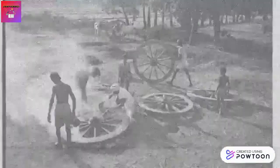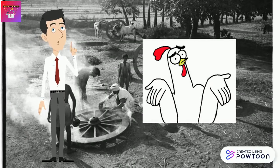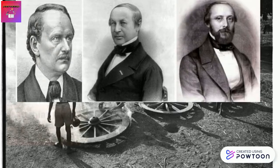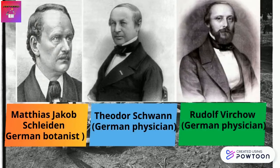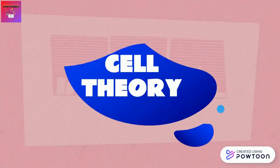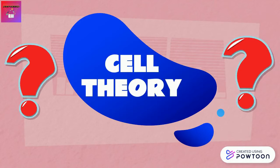Even though we now know so much about cells and their functions, back in the days scientists were still clueless about what all of us were made of. However, with the great work of scientists named Matthias Jacob Schleiden, a German botanist, Theodor Schwann, a German physician, and Rudolf Virchow, a German physician, and many other famous discoverers, a theory called cell theory was created. This theory led to countless findings on the origins of life on Earth itself.